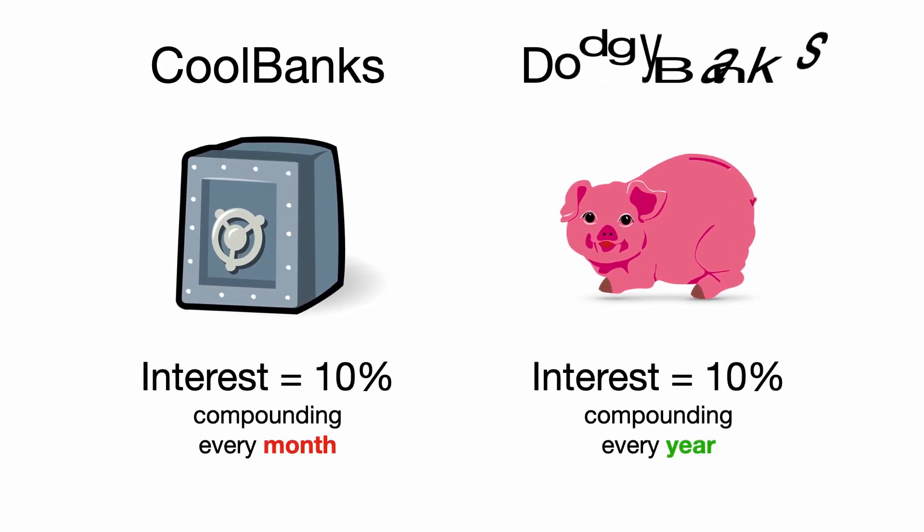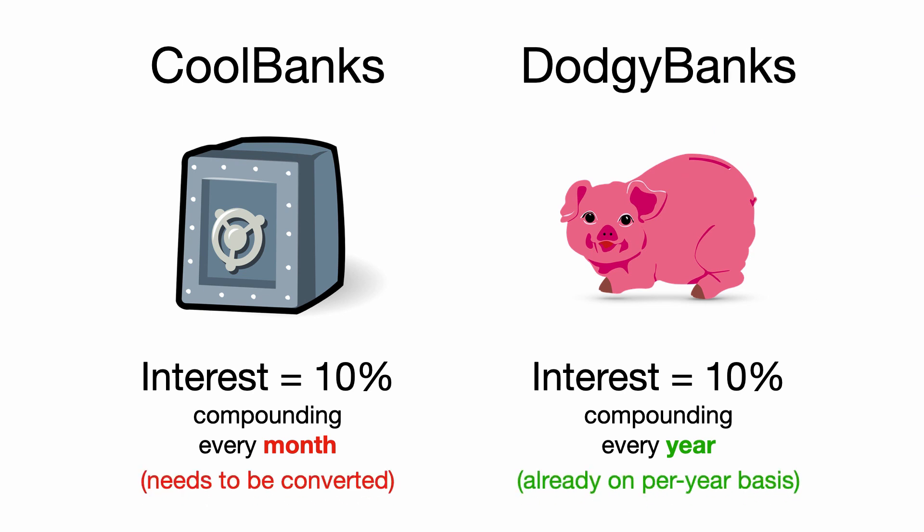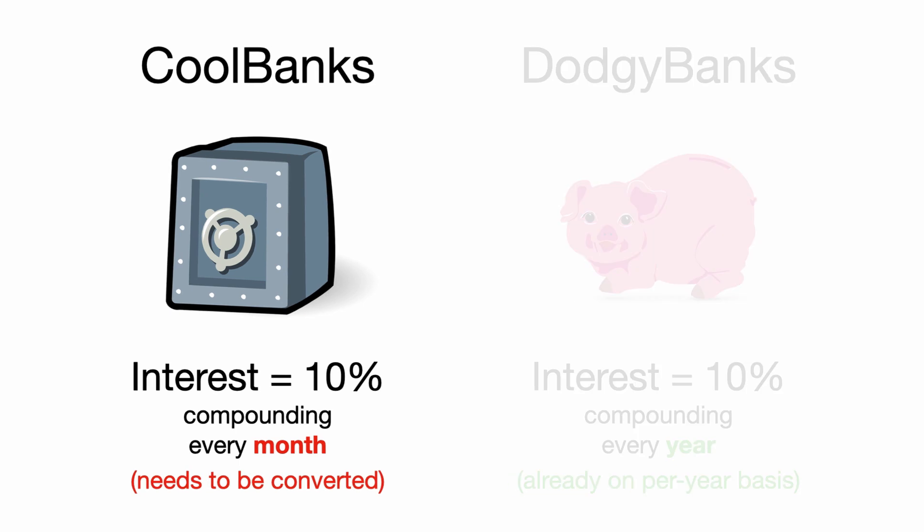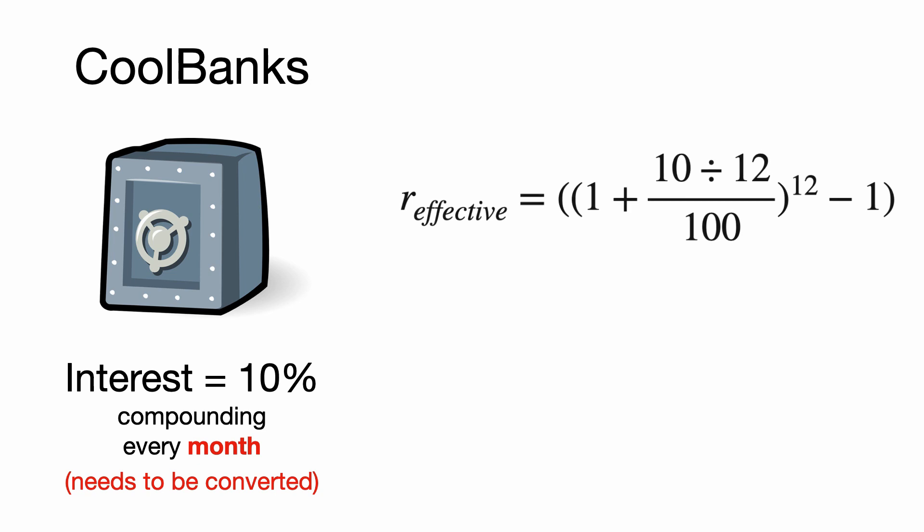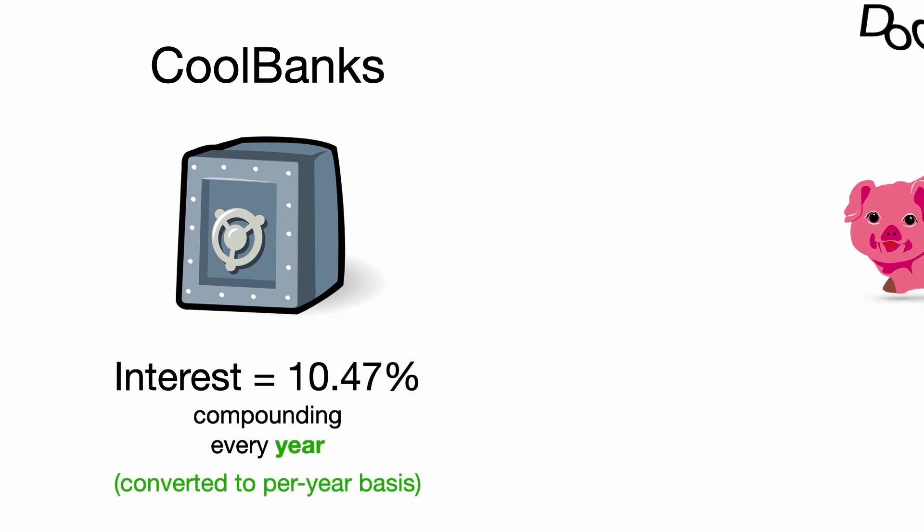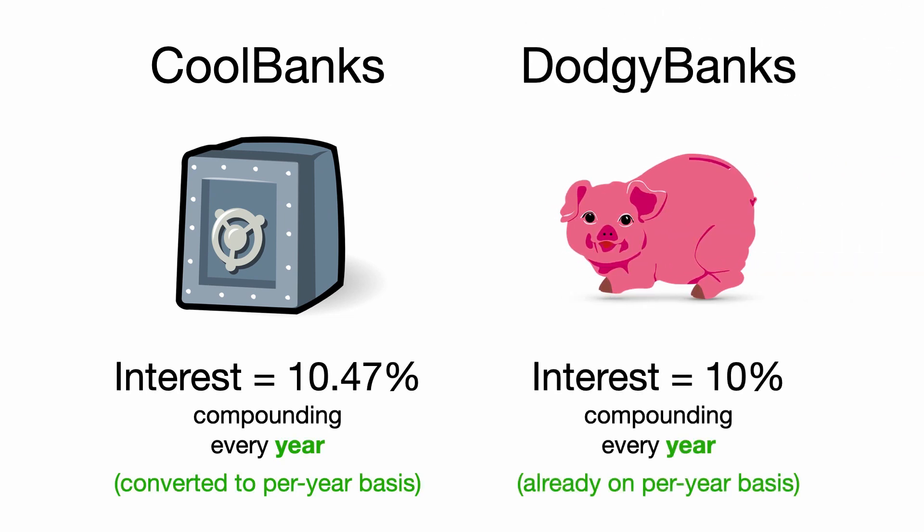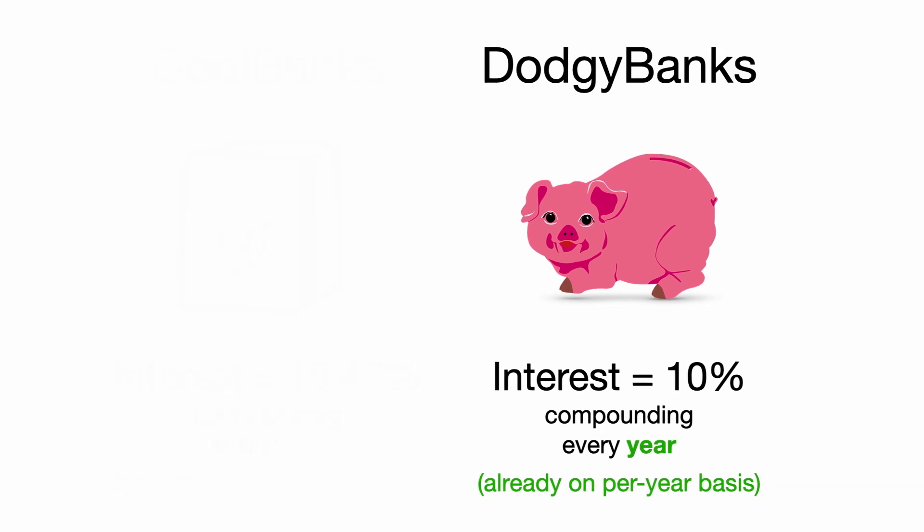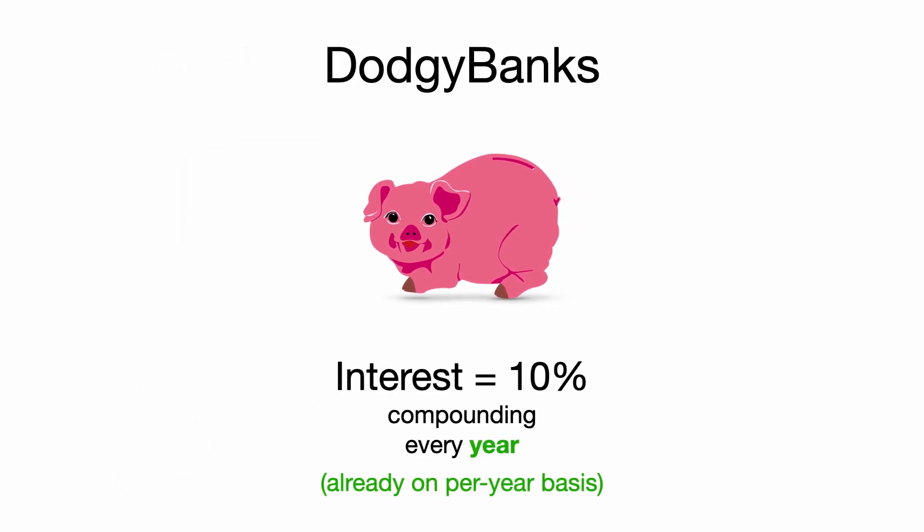Well basically we're going to convert the compounding frequency of the interest rates as if they were compounding on a yearly basis. The formula is pretty long, but it's not hard to use. We need to adjust the interest rate from Cool Banks because that's being compounded every month. But we don't need to adjust the interest rate from Dodgy Banks because that's already being compounded yearly. So let's use that formula and plug in our numbers and we calculate the Effective Annual Interest Rate to be 10.47% from Cool Banks.